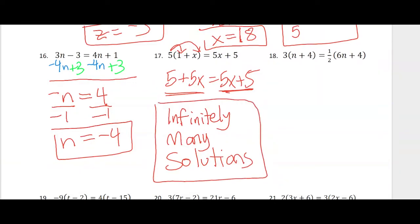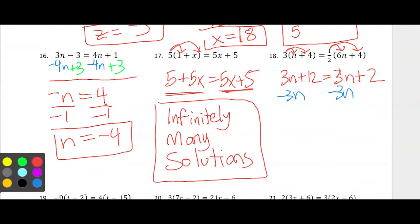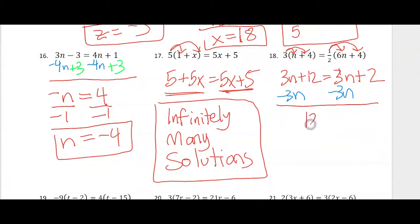For number 18, I'm going to distribute the 3 and get 3N plus 12, then distribute the 1/2 — 1/2 times 6 is 3, and 1/2 times 4 is 2. I can see my 3N terms are going to cancel out: 3N minus 3N is 0. I'm left with 12 equals 2, which is obviously not true. When you end up with a false statement, this is one of those special cases — you get no solution.